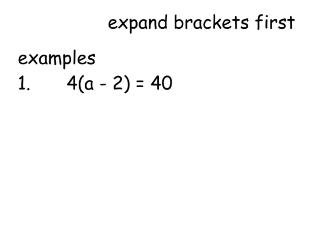So the rule is BODMAS. BODMAS means get rid of the brackets, so that's the first thing we're going to do here. We're going to expand this bracket. We're going to times everything on the left-hand side by 4. So we're going to do 4 times a is 4a, 4 times negative 2 is negative 8, and 40 has nothing to do with the brackets, so it just stays as it is, equals 40.